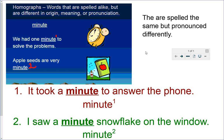If you look at the screen here, you'll see that I have homographs up at the top, words that are spelled alike, but are different in origin, meaning, and pronunciation. In other words, it's spelled M-I-N-U-T-E, but sometimes it's pronounced one way, and sometimes it's pronounced another way, and it'll have different meanings as well.